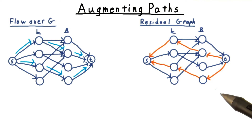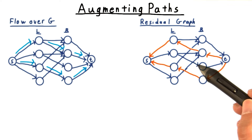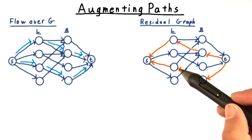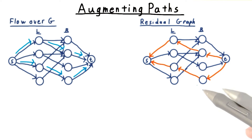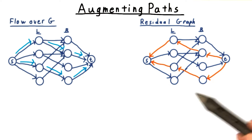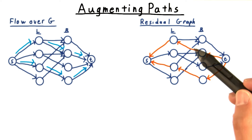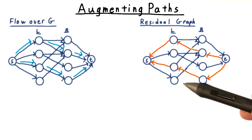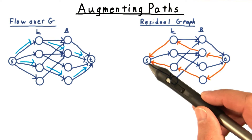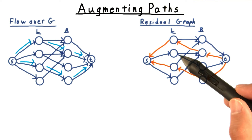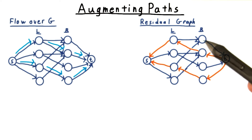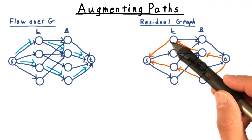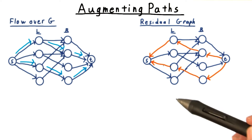That is to say, either the original edge is there or the reverse edge is there, never both. Moreover, the matched edges are the ones that have their edges reversed. Also, only unmatched vertices have an edge from the source to them or from them to the sink. Matched vertices have their edges reversed.